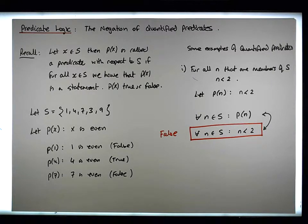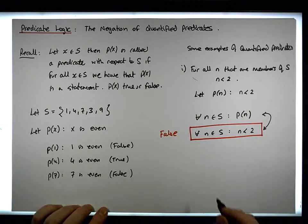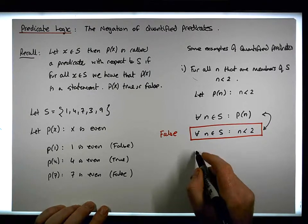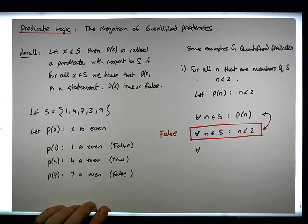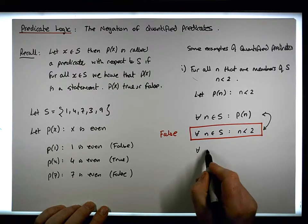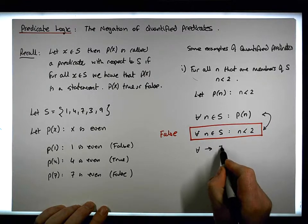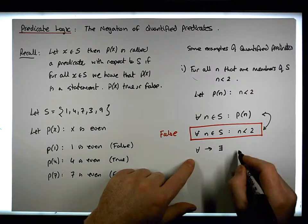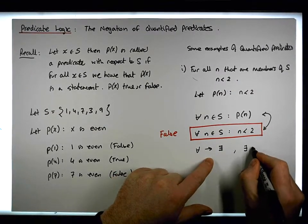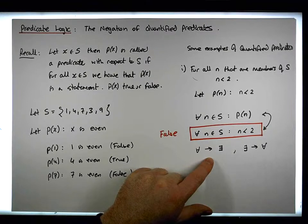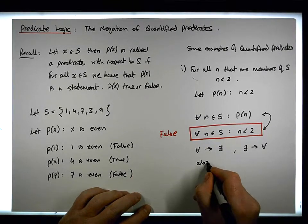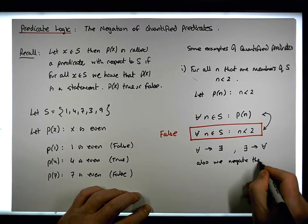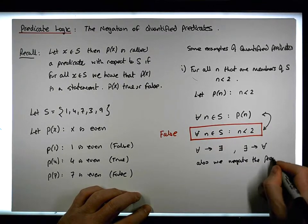So how do we find the negation of a quantified predicate? The negation is constructed by changing the quantifiers: the universal quantifier changes to 'there exists,' and 'there exists' changes to the universal quantifier. And also, we negate the predicate — we negate P of n.